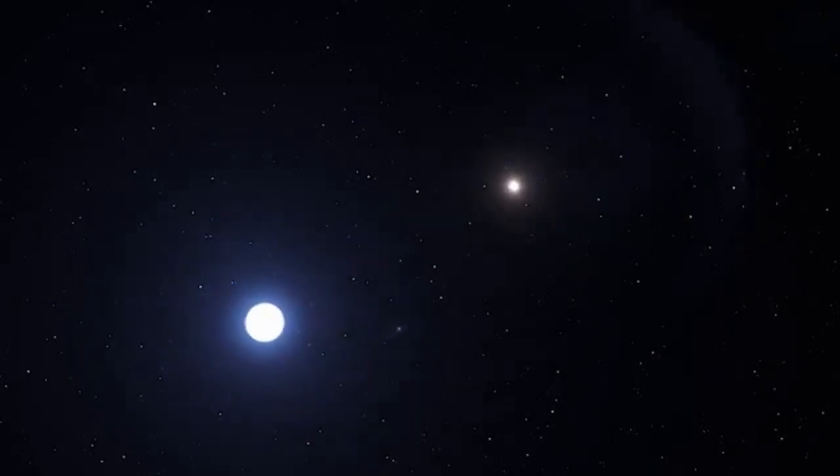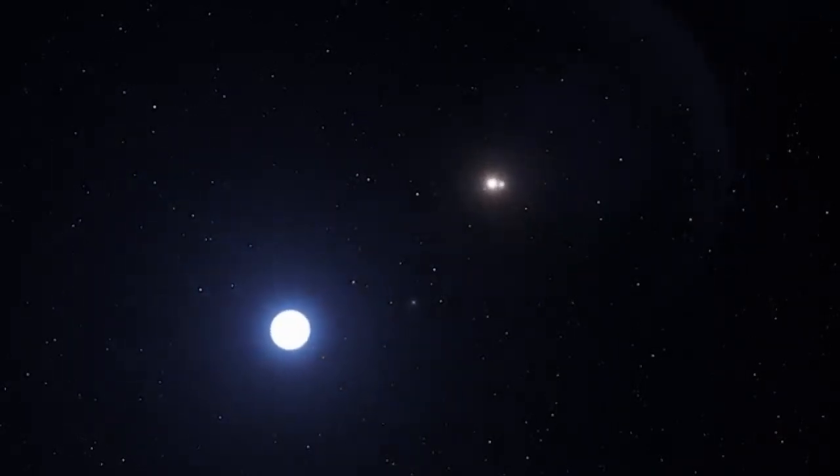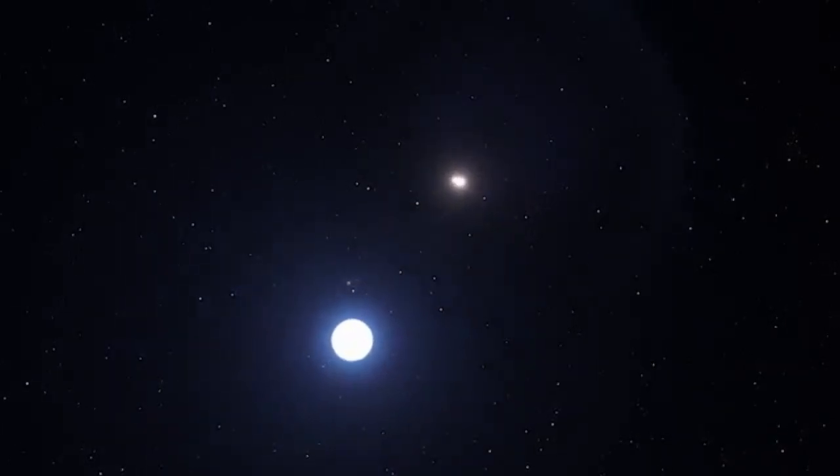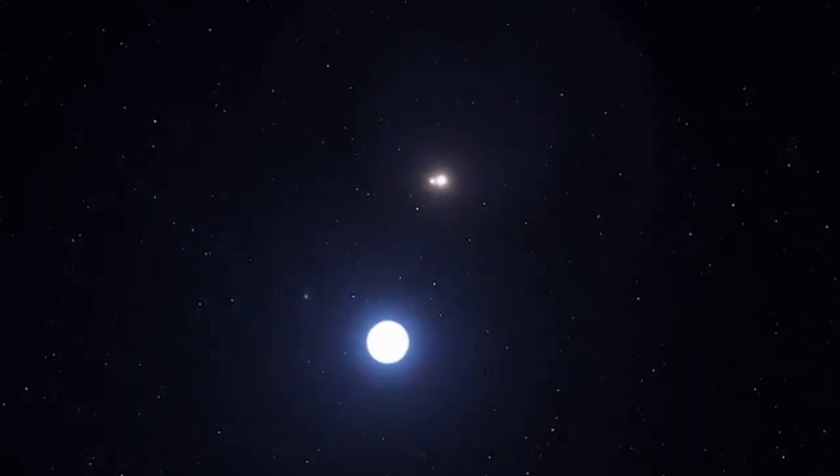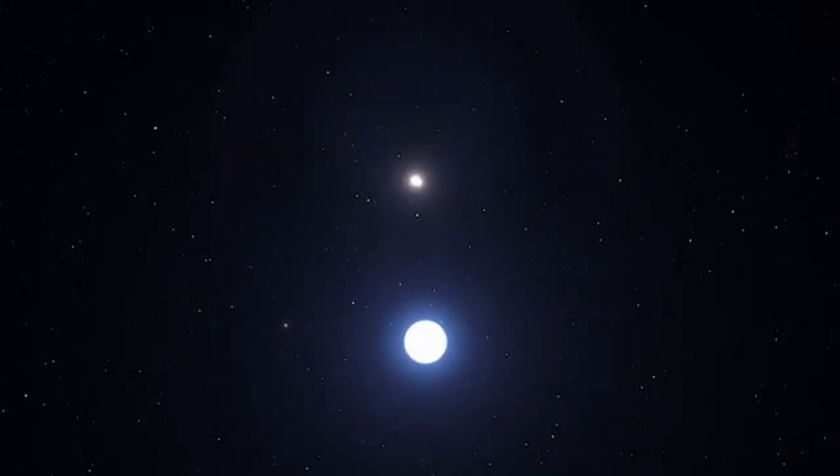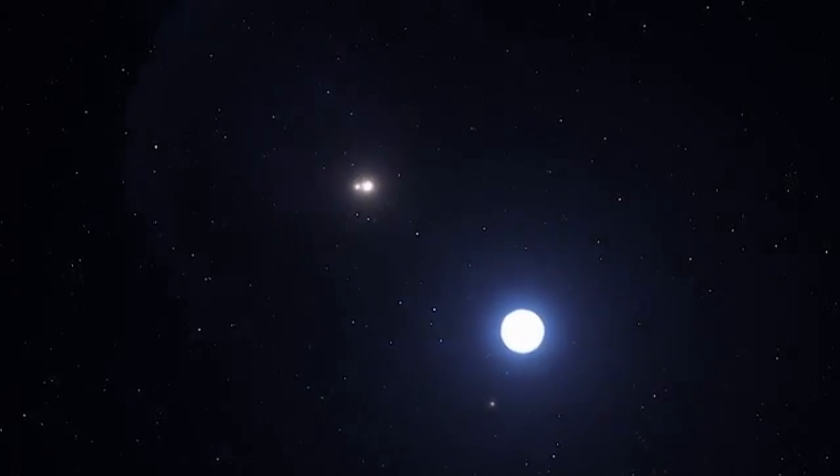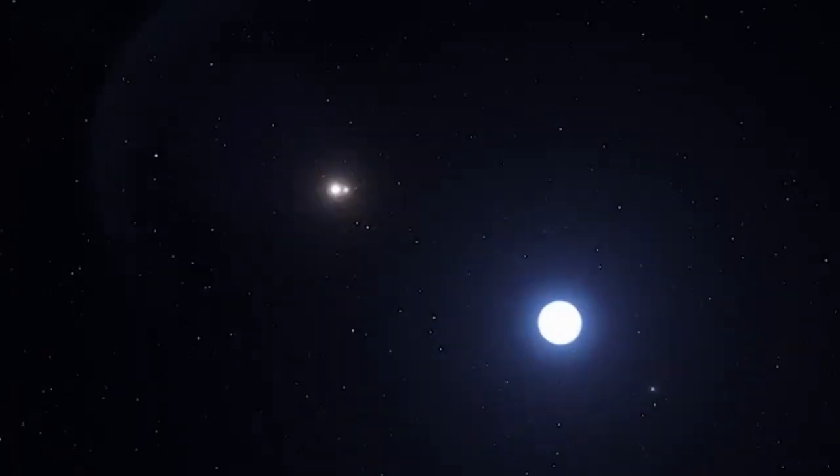Triple star systems with detected planets are rare enough. This is believed to be just the fifth such discovery. But the giant gassy world in this one, formerly known as planet HD 131399 AB, has the biggest known orbit in a multi-star system.